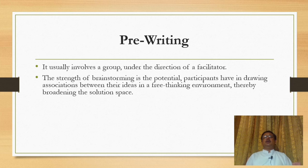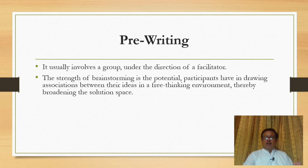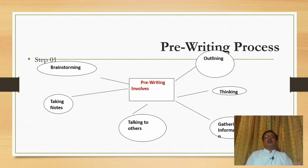At the brainstorming stage, quantity matters — the more the better. Brainstorming usually continues for 10 to 15 minutes maximum. After brainstorming, you organize your ideas, give them the shape of an outline, and delete the irrelevant or unimportant ones. At the pre-writing stage, you can use any of these techniques: brainstorming, taking notes, outlining, thinking, gathering information, and talking to others.